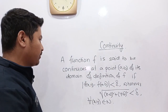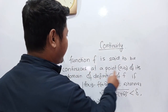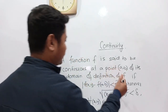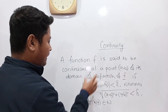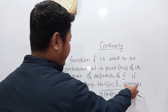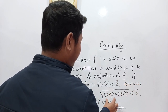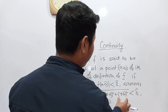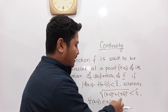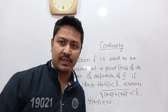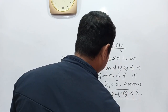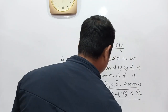So according to this definition, a function f is said to be continuous at a point (a,b), which is an arbitrary point of the domain, if mod of f(x,y) minus f(a,b) is less than epsilon, whenever the square root of (x−a)² + (y−b)² is less than delta. This inequality represents the delta-neighborhood of the point (a,b).